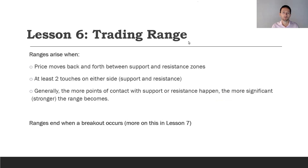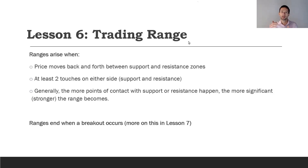A trading range is when the price moves back and forth between support and resistance zones. This is indicative of the supply and demand or the buyer-seller situation — at certain levels the buyers are stepping up, they like the price, and then it moves up to a resistance level where buyers are pairing back their positions or completely selling out. It's a constant struggle and war between the buyers and sellers.